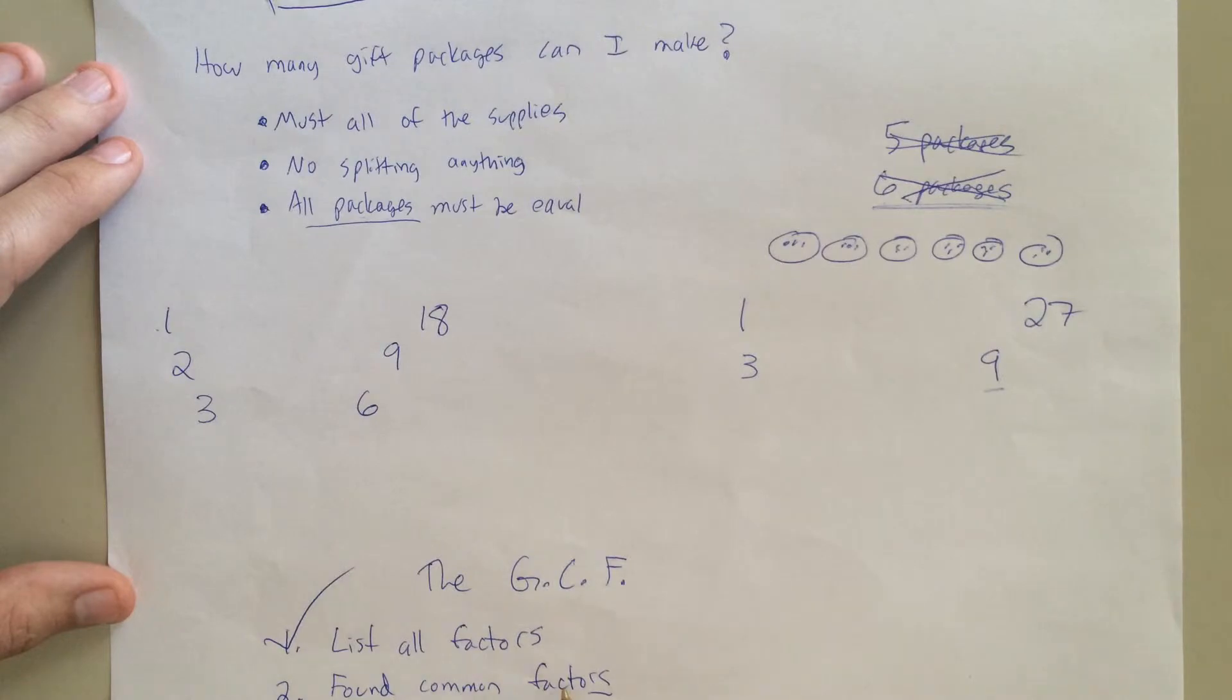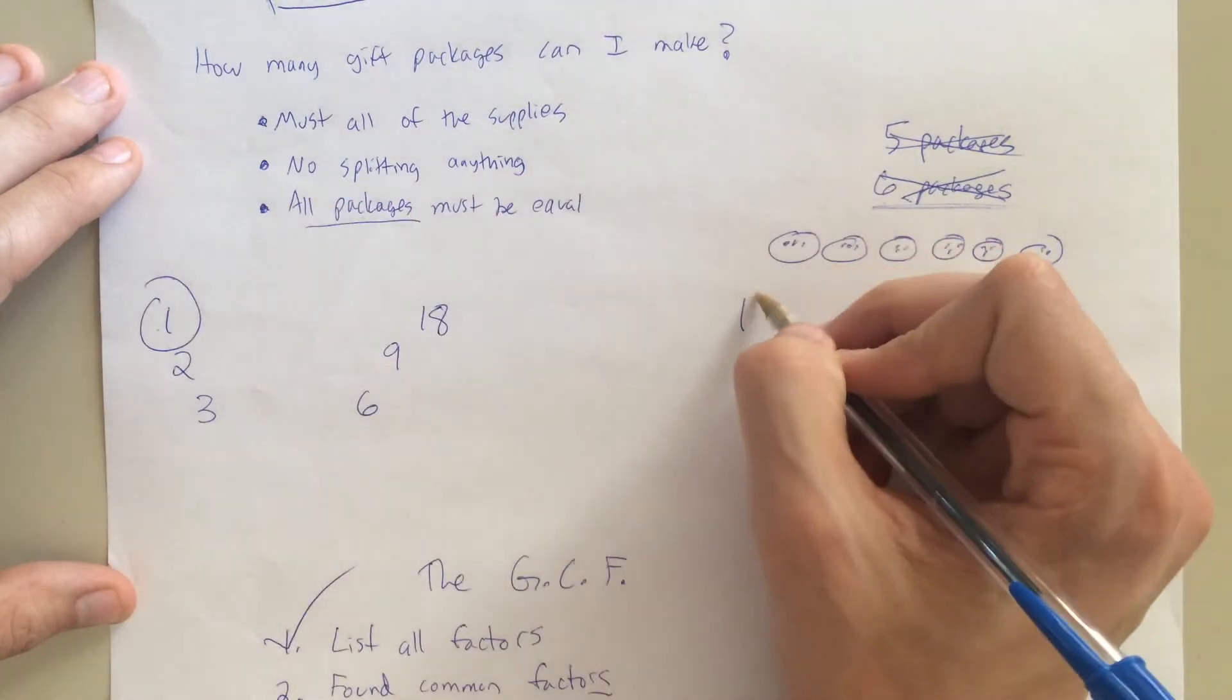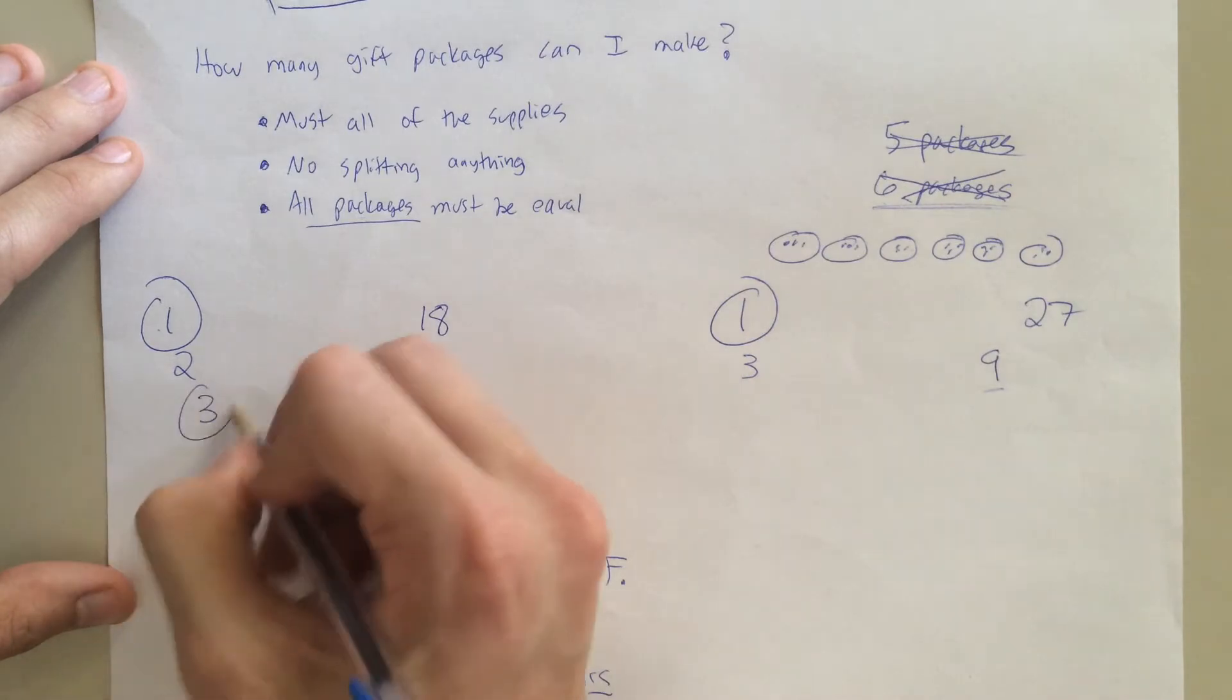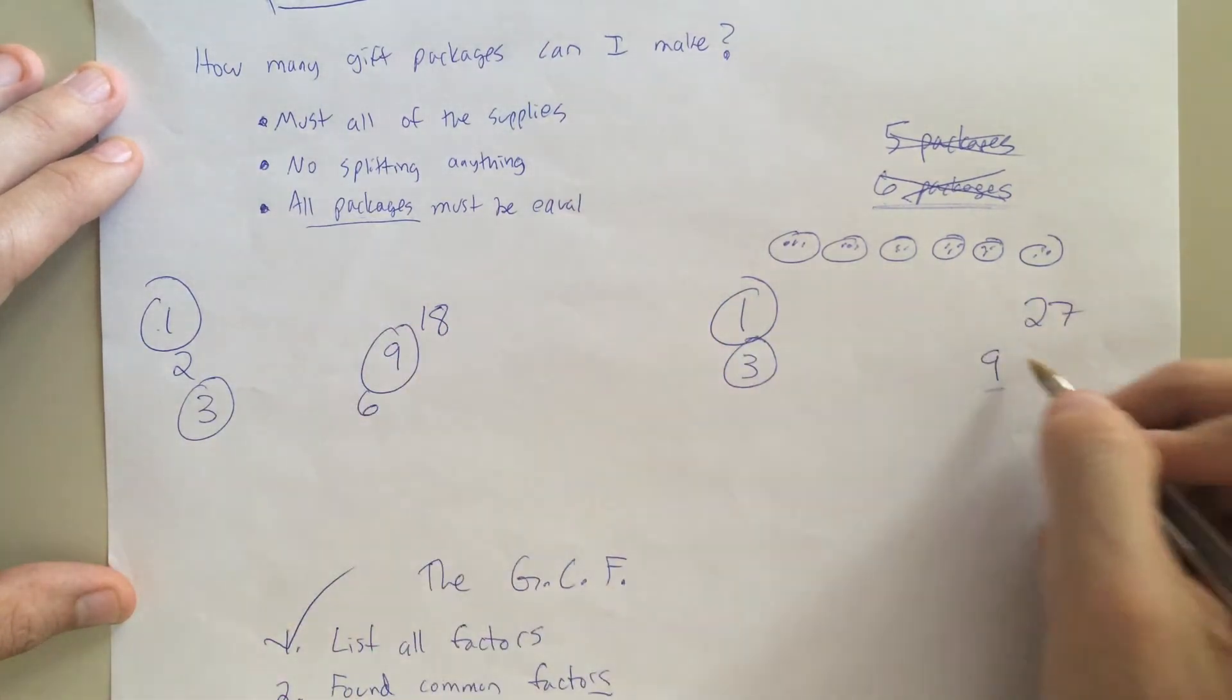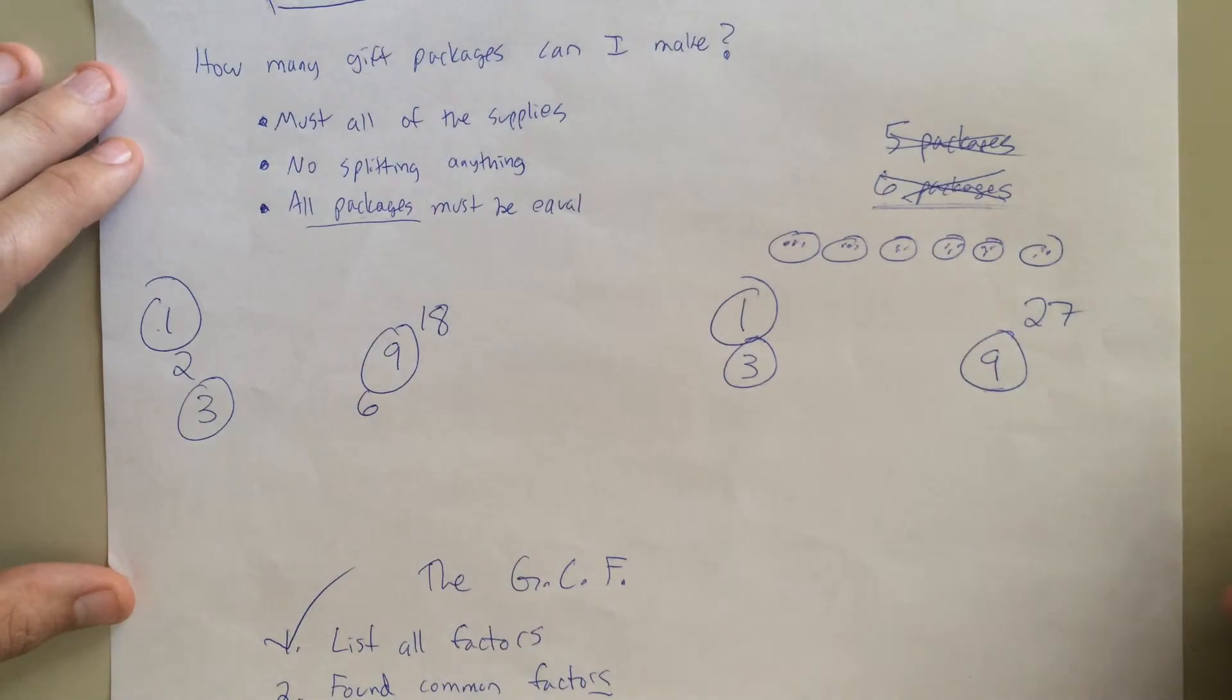So, now we're going to find the common ones. Well, again, we're playing I spy. So, I spy a one. I spy a three. And I spy a nine. Great. All the common factors. So, now I'm going to look at this.